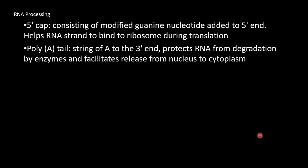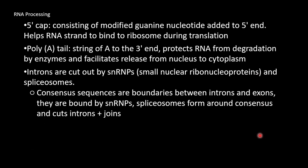Introns, which are non-coding regions in DNA, are cut out by snRNPs, small nuclear ribonucleoproteins, and spliceosomes. Consensus sequences are boundaries between introns and exons. They're bound by snRNPs. Spliceosomes form around consensus and cuts introns and joins the remaining exons.